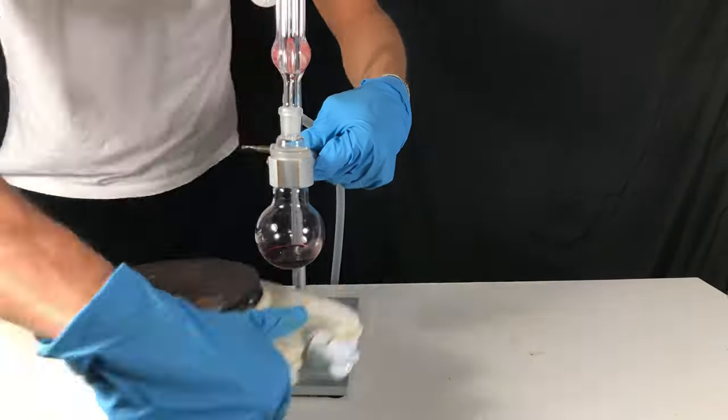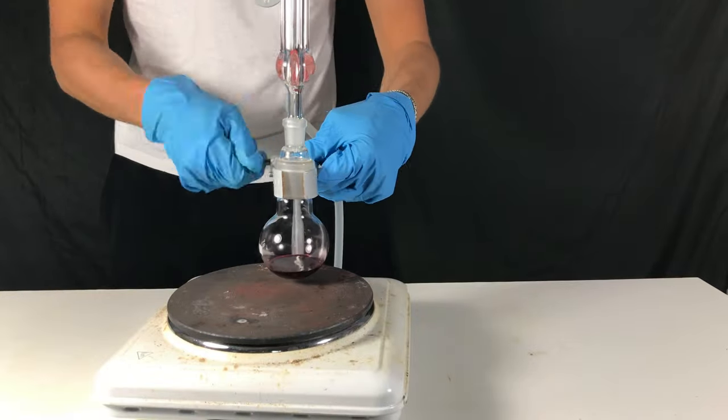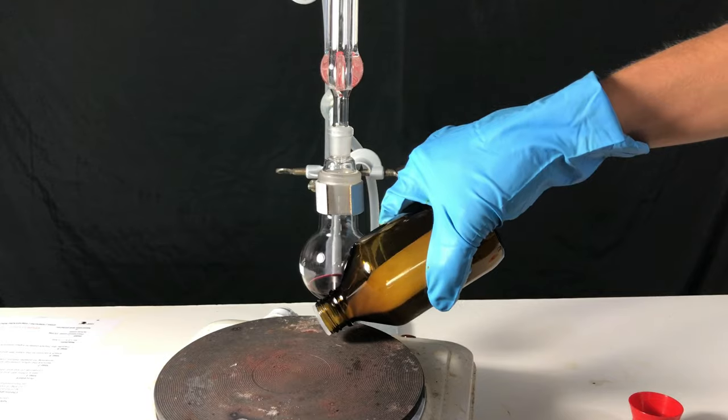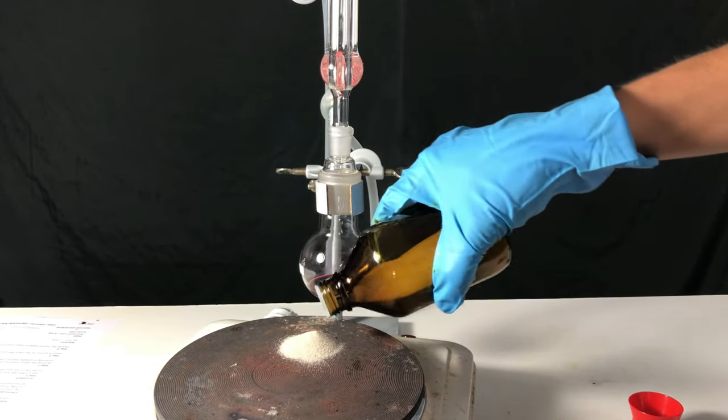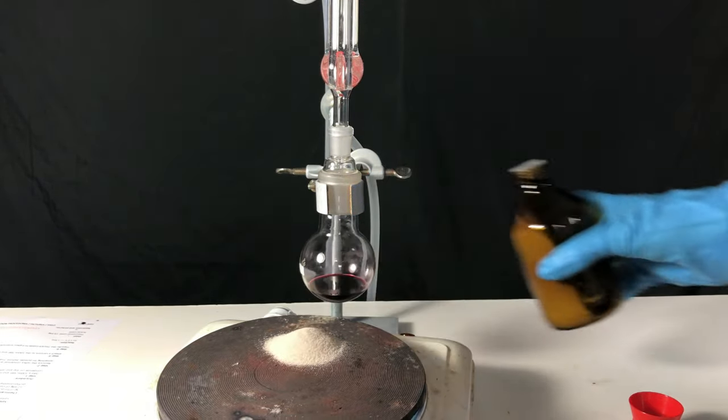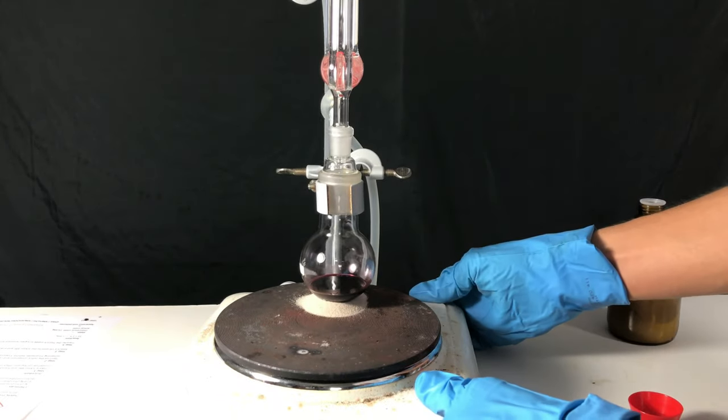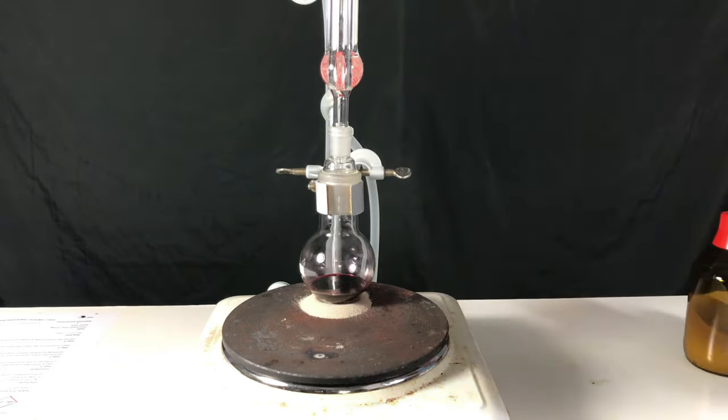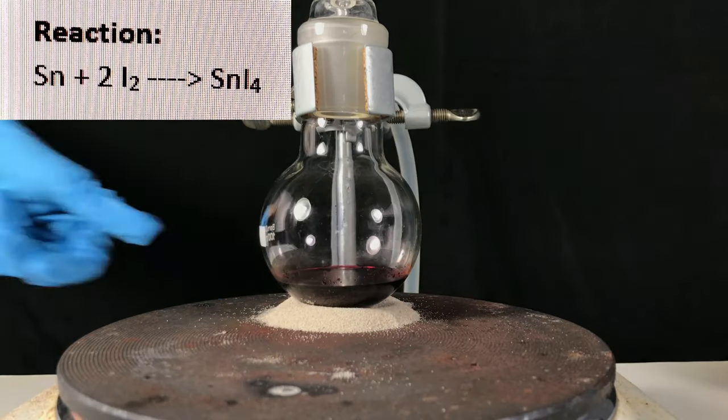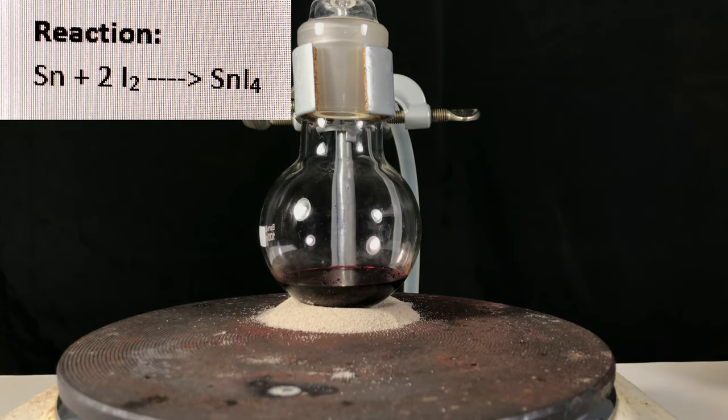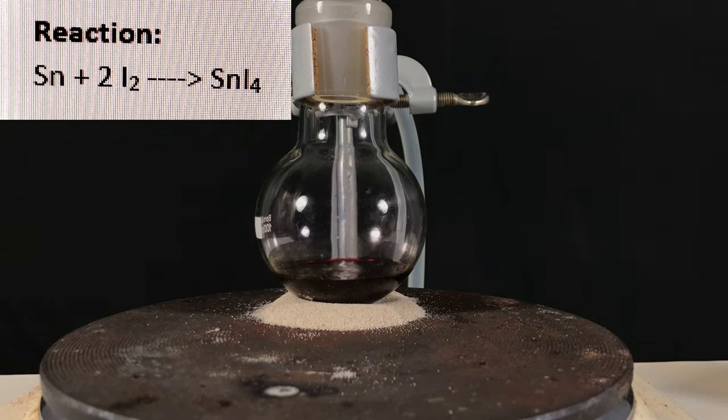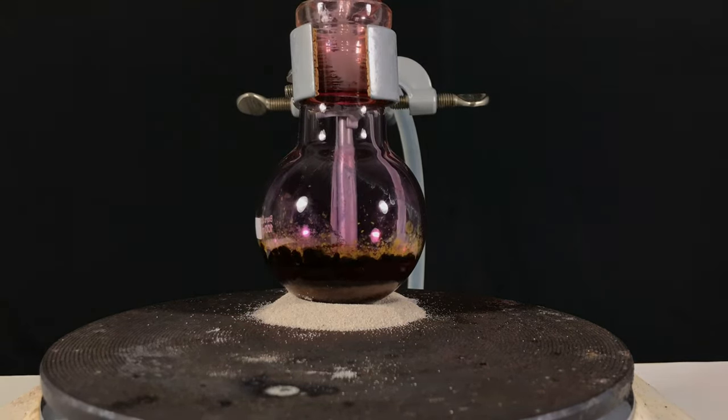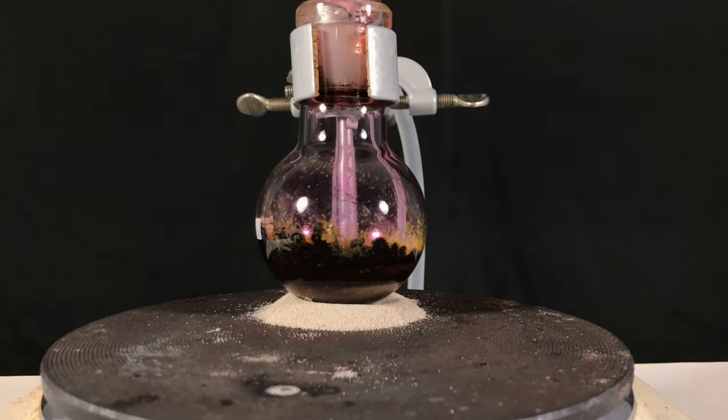We should have done this beforehand but because I didn't do it I added a hot plate. Some plain normal sand was put onto the hot plate to ensure more even heating. Two minutes later the mixture started boiling. Purple vapors of iodine appeared on the flask.